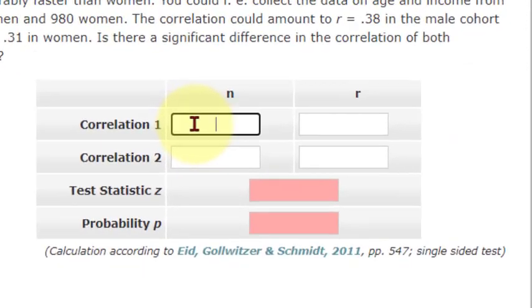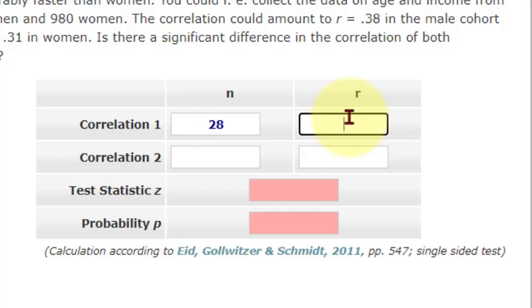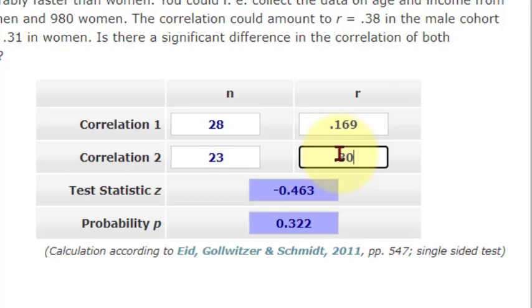All right. By memory, the first correlation was 0.169. Sample size was 28 for the first group. Correlation was 0.169. Second group, it was 23 sample size, and the correlation was 0.301. 0.301. And that's... Hey, we got the exact same thing. Oh, my God. I got it right.